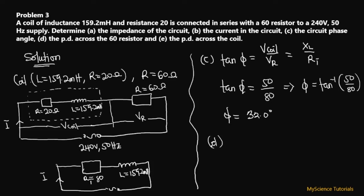For part (d), the potential difference across the 60 ohm resistor: VR = I × R = 2.544 × 60 = 152.6 volts.